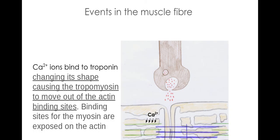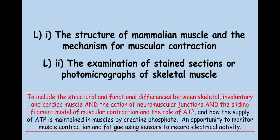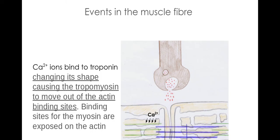And therefore allowing actin and myosin to form a cross bridge. We then get the power stroke. After the power stroke we need ATP to break that cross bridge so that we can form another cross bridge at another point, shortening that sarcomere and causing that muscle contraction.